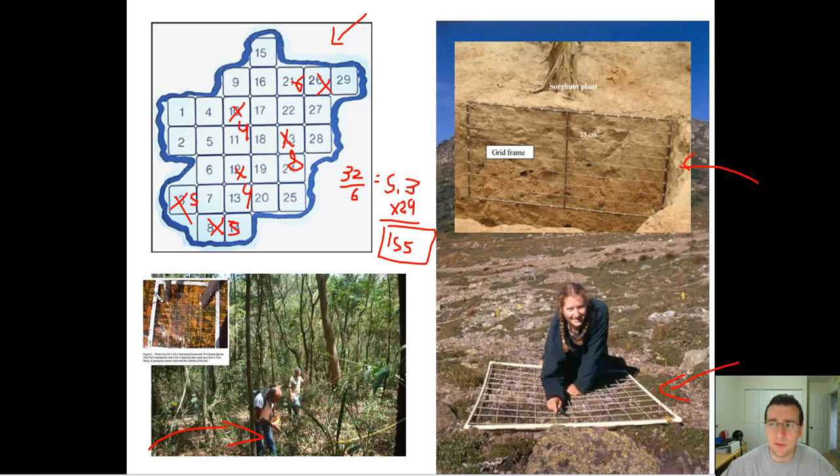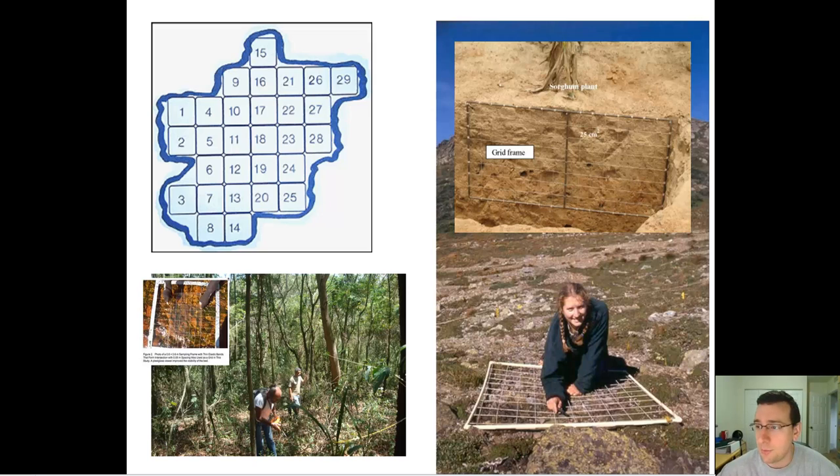So what this is telling us then is there's an easier way to count the whole rather than counting the whole of it. You can just split the whole into pieces, count a few of the pieces that you randomly choose, get the average number of organisms among those pieces, and multiply by the number of pieces that you have. And we're going to do a lab in class to show this, but when you do this, you basically get an estimate for the population.